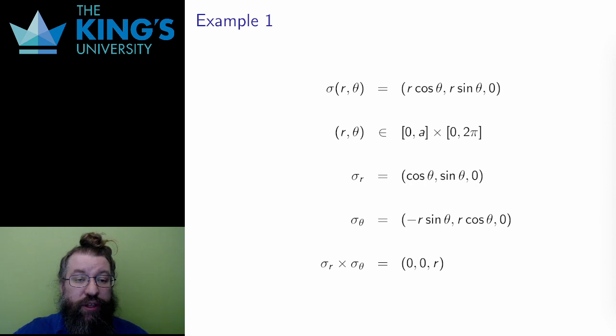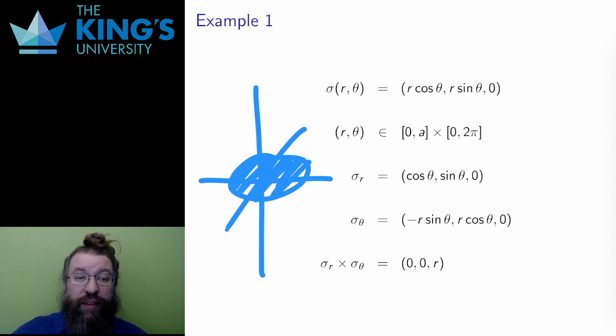The surface I want to consider in this video is a disk in the xy-plane in R3. So here's the parameterization: r cos theta and r sin theta in x and y, and z equals 0, since the surface is in the xy-plane where z equals 0.